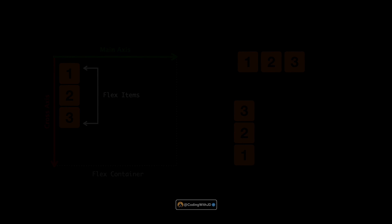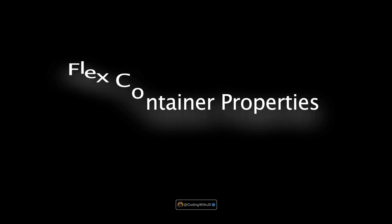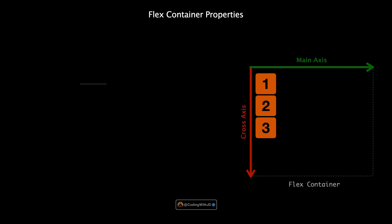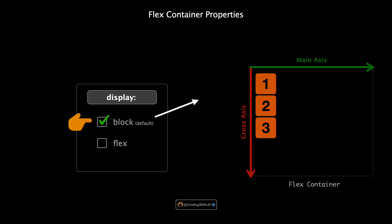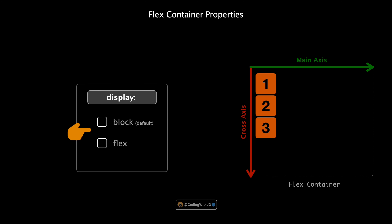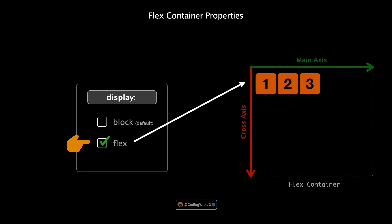This helps us determine how our items are laid out side by side horizontally or stacked vertically. First, we're going to start with the flex container properties. Let's talk about the display property. Normally elements on a web page use a display value of block or inline, but to activate flexbox we need to switch the display value of our container to flex. Watch what happens — by setting it to flex, all the items in our container automatically line up in a row along the main axis.